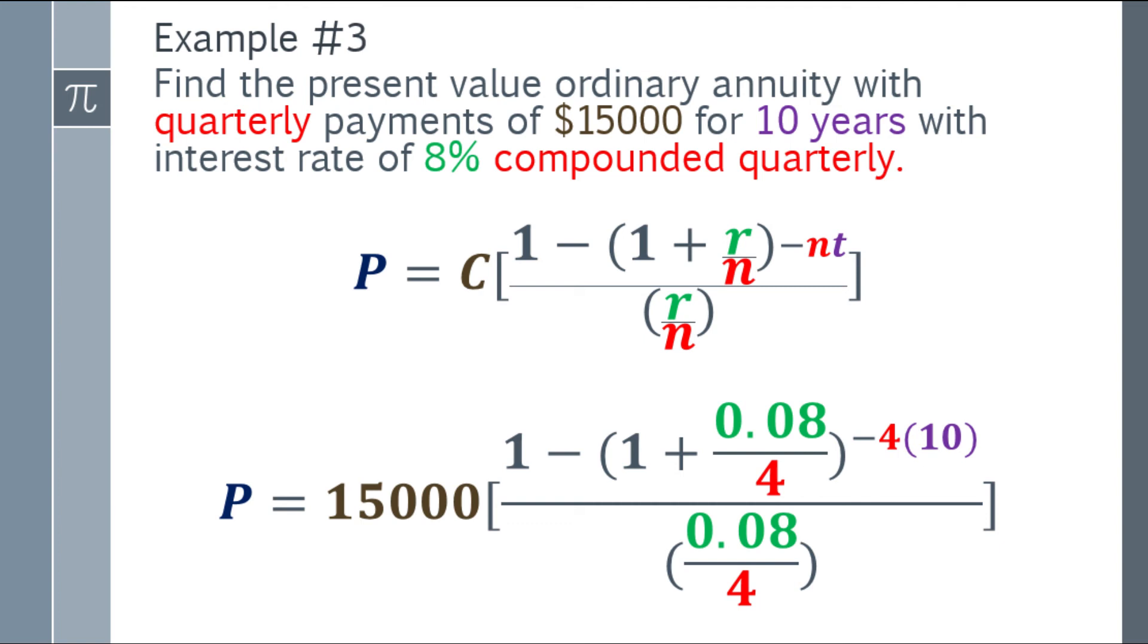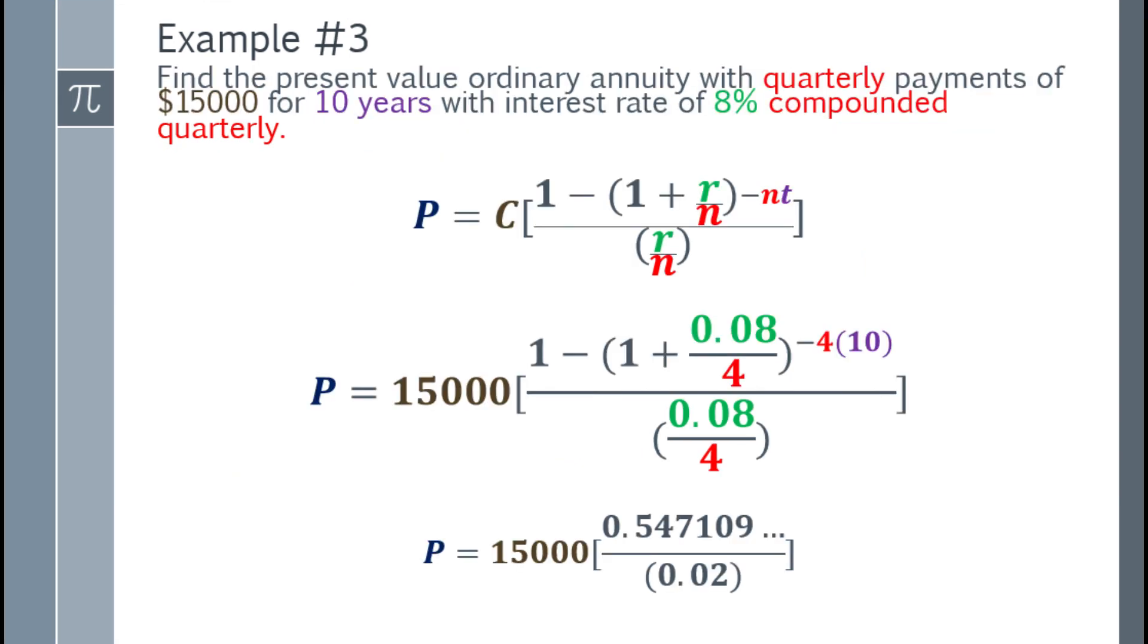Next, simplify the numerator and denominator. In the numerator, that will be 0.547109 and so on. In the denominator, that will be simply 0.02.